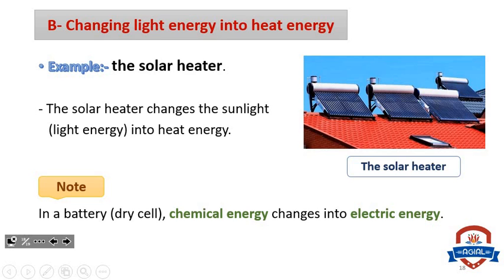Number two: changing light energy into heat energy. For example, the solar heater. The solar heater takes sunlight and changes it into heat energy. In the battery, chemical energy changes into electric energy.